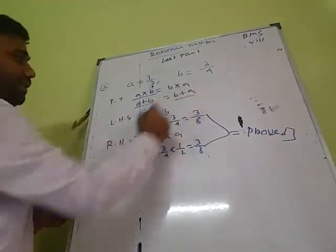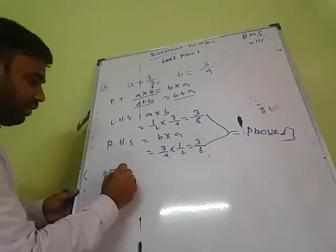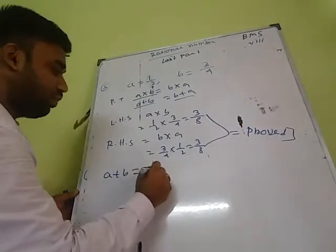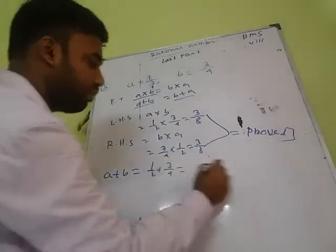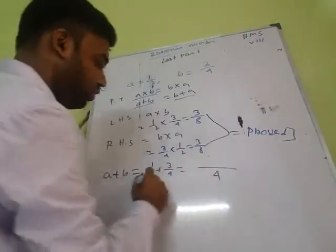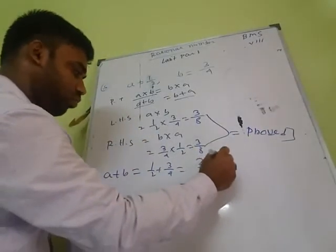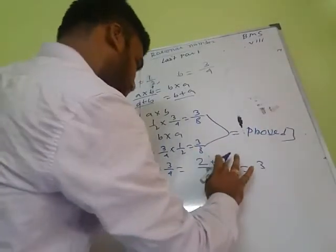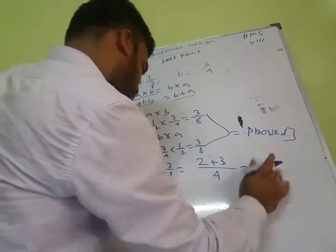Now for addition: A plus B equals 1 by 2 plus 3 by 4. Finding a common denominator of 4, we get 2 by 4 plus 3 by 4, which equals 5 by 4.